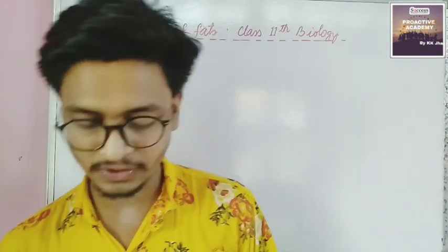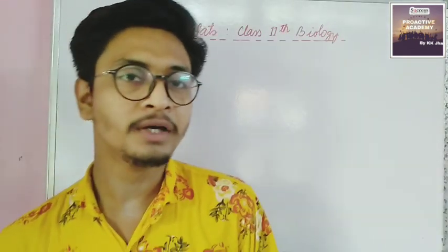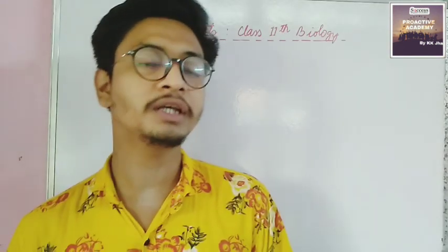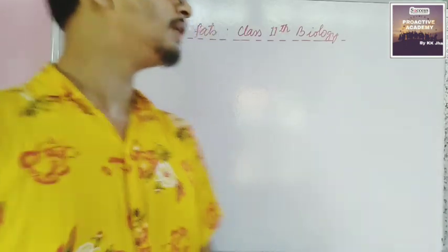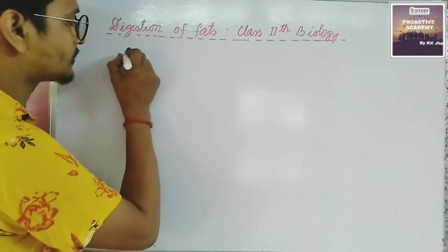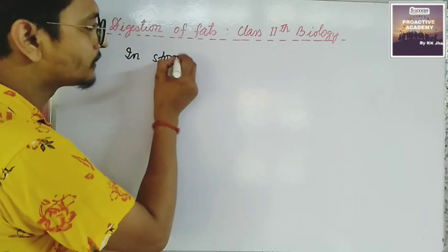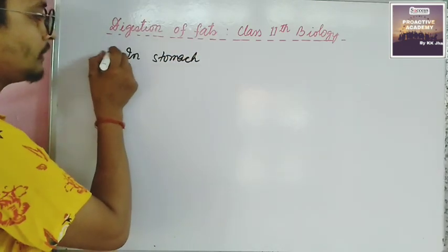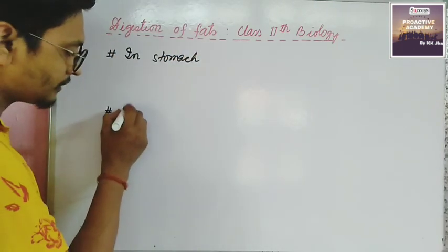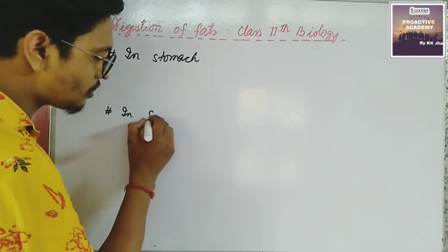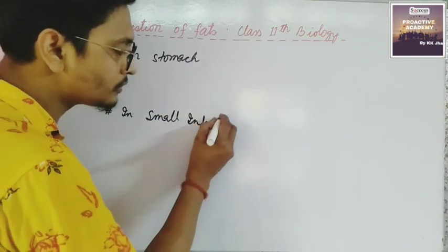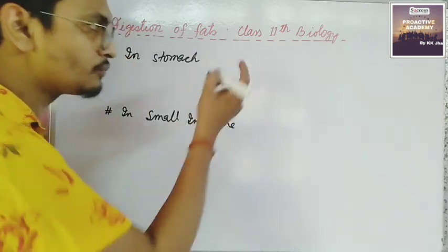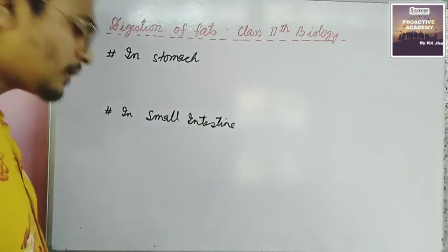So, digestion of fats basically occurs at two places in the human alimentary canal — first in the stomach, and second in the small intestine. Fat digestion happens at these two locations.